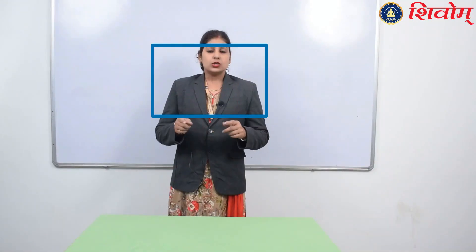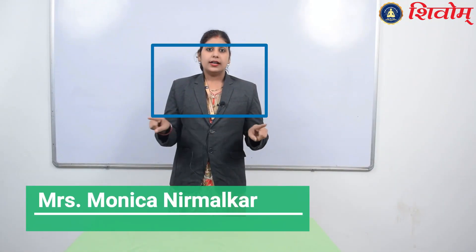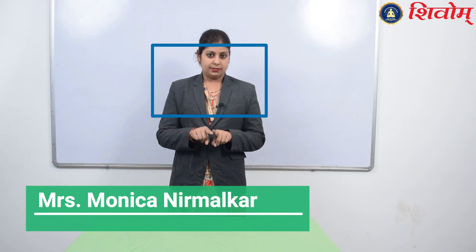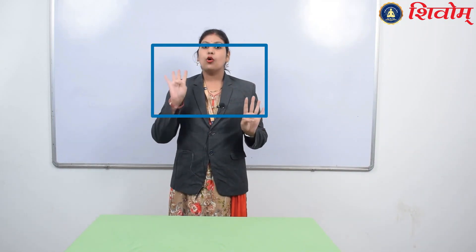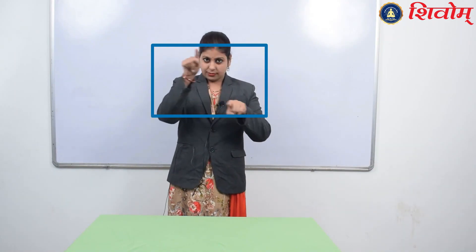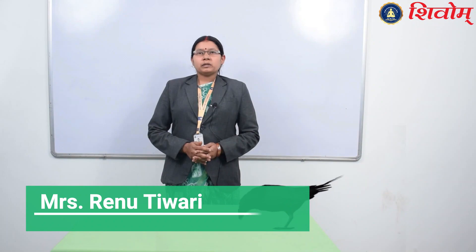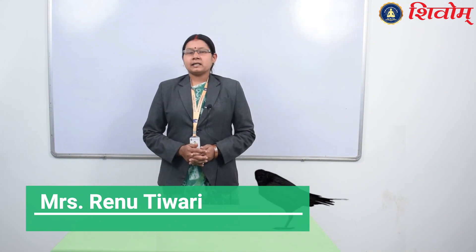Look at this picture — it is a rectangle. This line is called a side. A rectangle has four sides and four corners.